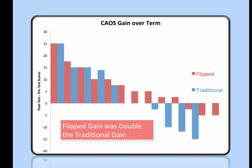But on average, the gains in the flipped classroom—the red—were twice as much for individual students as the gains in the traditional class—the blue.